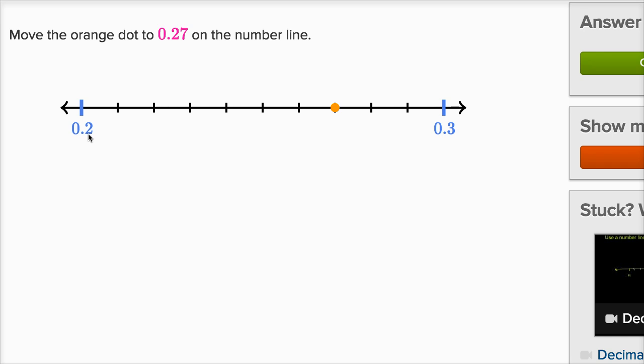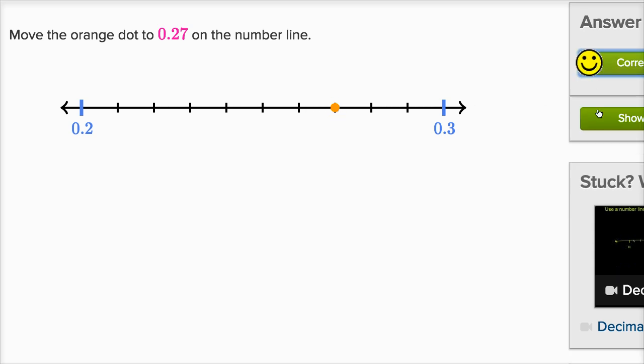Two tenths is the same thing as twenty hundredths. 21-hundredths, 22-hundredths, 23-hundredths, 24-hundredths, 25-hundredths, 26-hundredths, 27-hundredths. All right, check our answer.